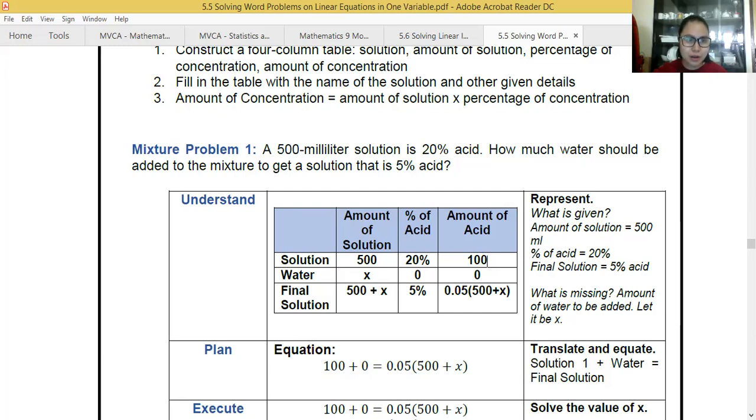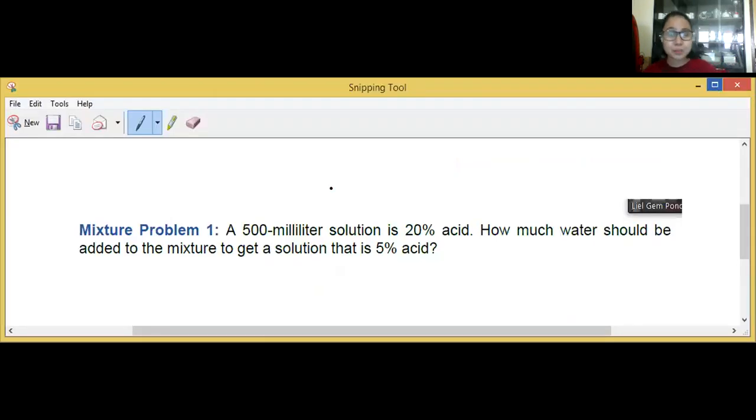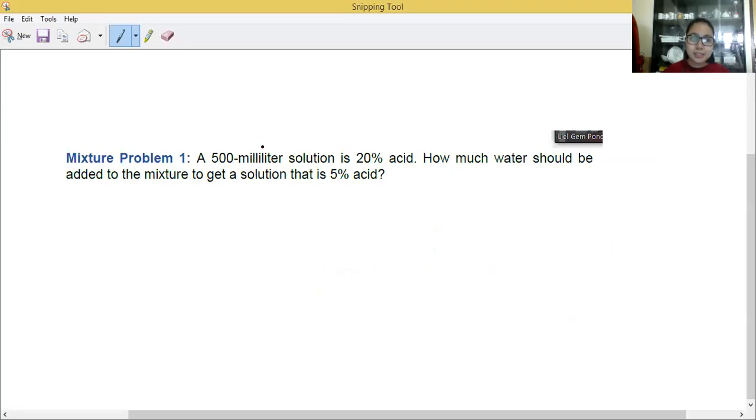Let me do our first problem. Here's our first problem. Let's start by reading it. A 500 milliliter solution is 20% acid. How much water should be added to the mixture to get a solution that is 5% acid?